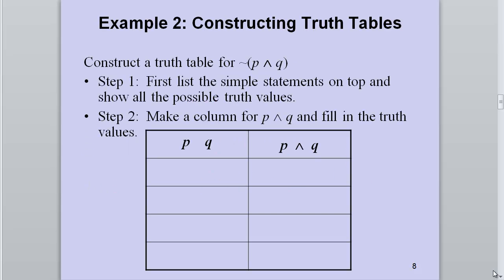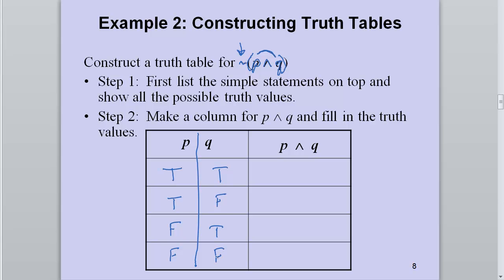Now we'll construct a slightly more difficult one: not (P and Q). By the dominance of connectives, I have to do the inside of the parentheses first — do the AND, then take the negation of the result. I'll follow the same structure: true, true, false, false for p, and true, false, true, false for q. For the AND column: both true gives true; at least one false gives false for the remaining three rows.